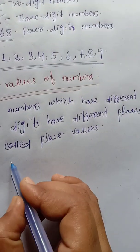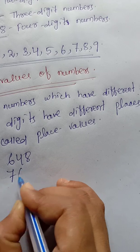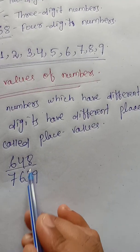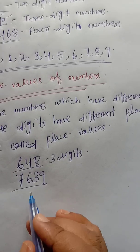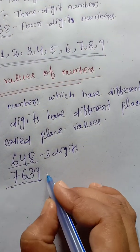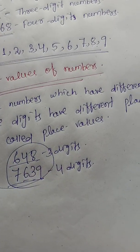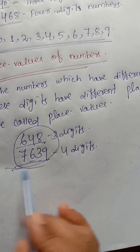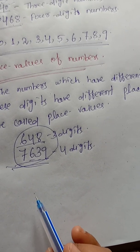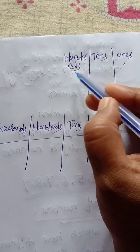Suppose there are two numbers: 648 and 7639. These numbers have different digits. The first number has three digits and the second number has four digits: 1, 2, 3, 4. So it has four digits. These two numbers have different places. The first number has three digits, so it has three places. The second number has four digits, so it has four places. Those three places are ones, tens, and hundreds.